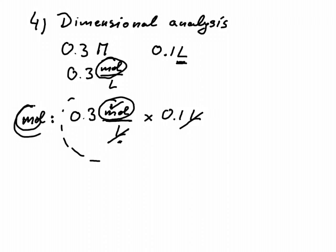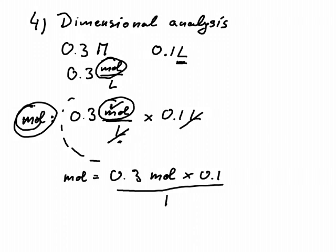So our equation now reads the number of moles equals 0.3 mole times 0.1 divided by 1. That was the liter that we have here and that gives us 0.03 mole.